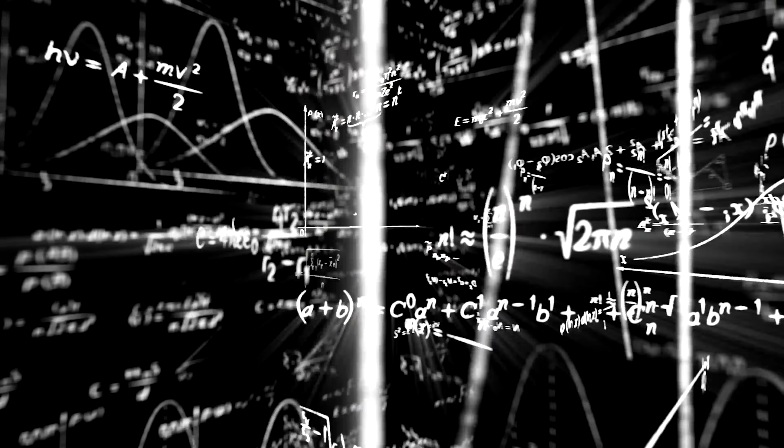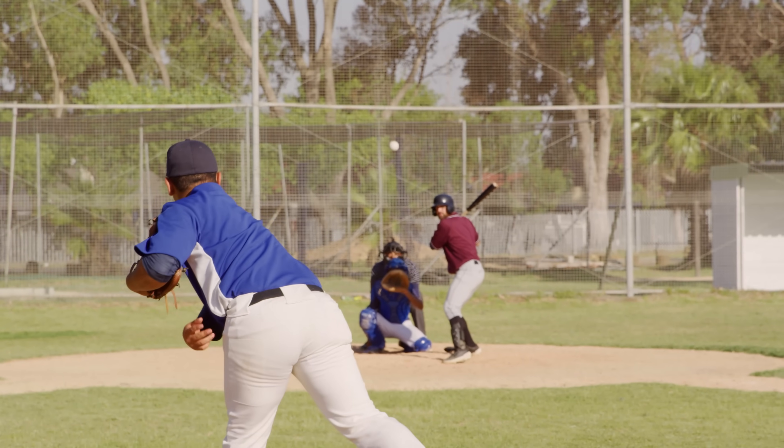We have this concept in physics called determinism. What it means is if you have a baseball and you throw it — if you know the initial angle exactly, the initial velocity exactly, the height above the ground, and the force of gravity — you can write down an equation that predicts the position and velocity of that ball as it flies through the air with great precision.